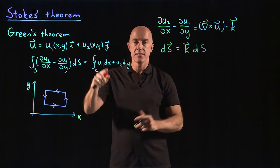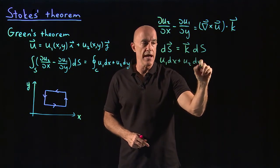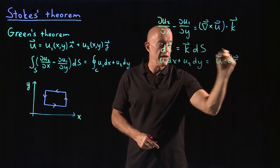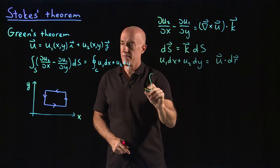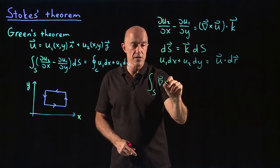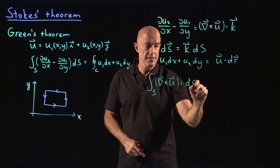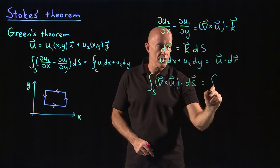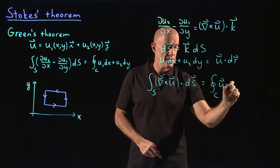Finally, this u1 dx plus u2 dy is simply u vector dot dr. Putting everything together, we end up with the integral over the surface of del cross u dotted into ds, which equals the integral over the closed curve of u dot dr.